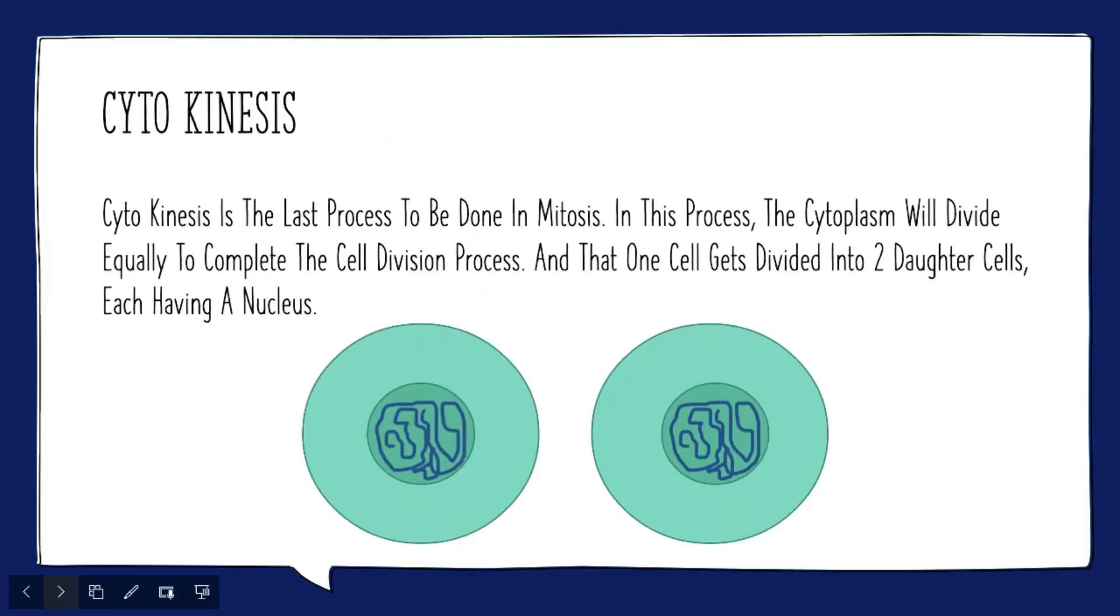Now we are going to be looking at cytokinesis. Cytokinesis is the last process to be done in mitosis. In this process the cytoplasm will divide equally to complete the cell division process. And that one cell gets divided into two daughter cells with each having a nucleus.